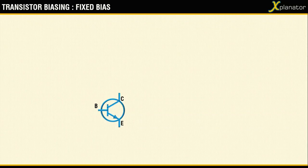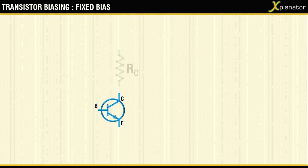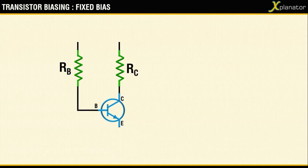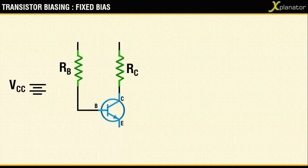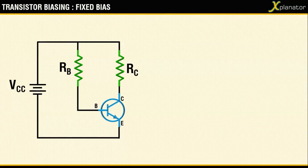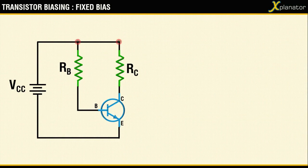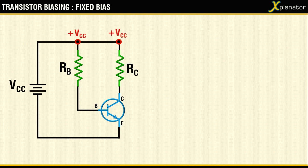To build a fixed bias circuit, we will need two resistors—one which connects to the collector terminal and the other which connects to the base terminal. The circuit will be powered with a DC supply. If you observe, the top nodes get a plus VCC on to them, and the node which is at the emitter terminal gets a minus VCC, or we call it a ground.